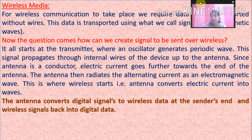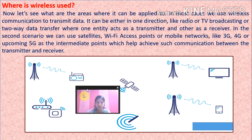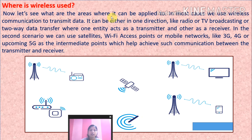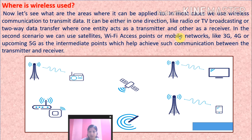When we use wireless data connection, we take the help of the antenna. Wireless communication is used in most cases to transmit data either in one direction, like radio or TV broadcasting, or as two-way data transfer where one entity acts as a transmitter and the other as a receiver. In the two-way scenario, we can use satellites, Wi-Fi access points, or mobile networks like 3G, 4G, or upcoming 5G as intermediate points.